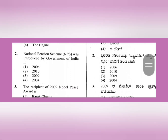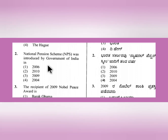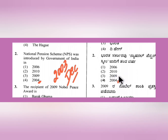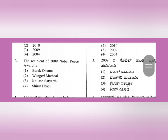Question 2: The NPS scheme - National Pension Scheme - was introduced by the Government of India. It was actually started in December 2003 but applied from January 2004. So the answer is option number 4: 2004.